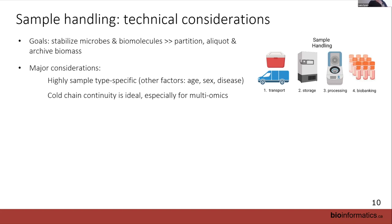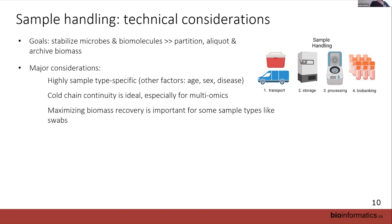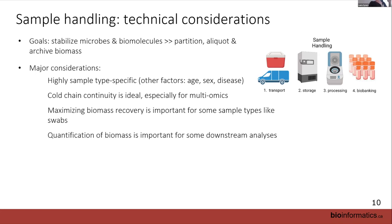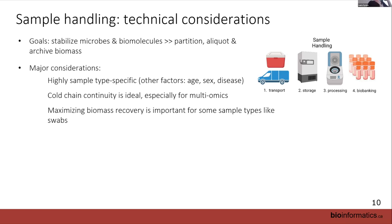Cold chain continuity is ideal and needs to be maintained all the way through all four steps. Recovering biomass into processing steps is not always simple — getting material off a swab is not straightforward. We developed a hack using spin baskets: we clip the swab, place it in the spin basket, and centrifuge the material off. This has really increased our biomass recovery. Little details in your prep process can make a big difference.